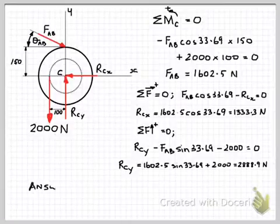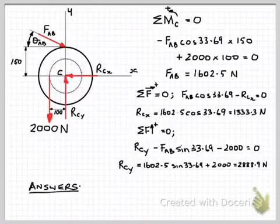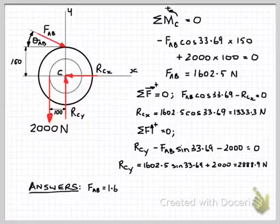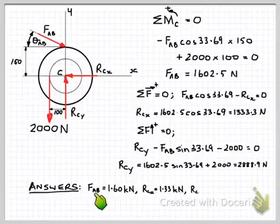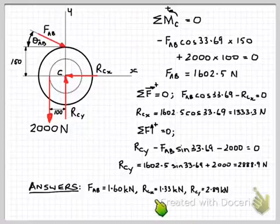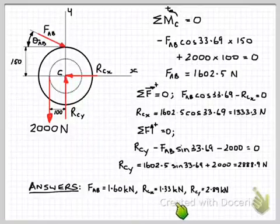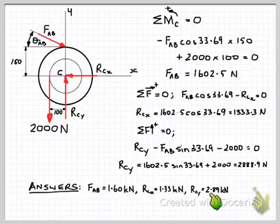Okay, so all we need to do now is to write our final answers at the end. And in doing that we, of course, round up our answers to three significant figures. So the force in the pawl AB was 1.60 kilonewtons. The X component of the force at the pin C was 1.33 kilonewtons. And the vertical component of the force at C is 2.89 kilonewtons.